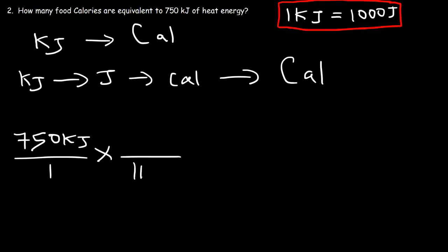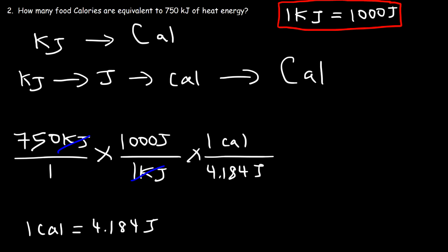So I'm going to put 1 kilojoule on the bottom and 1,000 joules on top so that these units cancel. Now based on the last example, we know that 1 lowercase calorie is 4.184 joules. So I'm going to put joules on the bottom and then 1 calorie on top. Now the last conversion that we need is that 1 food Calorie is 1,000 lowercase calories. So we can put that on the bottom here.